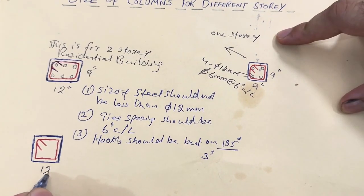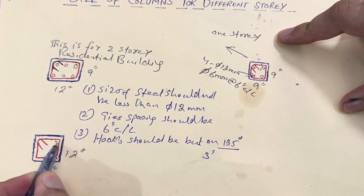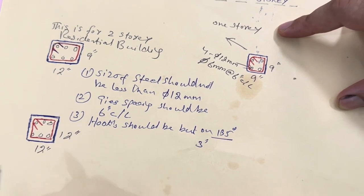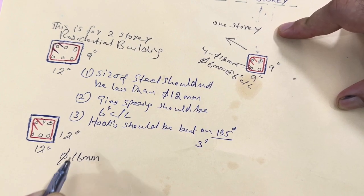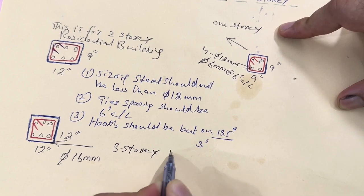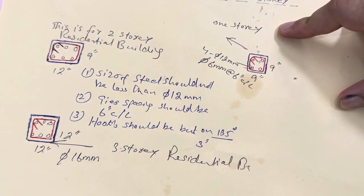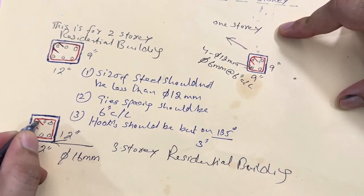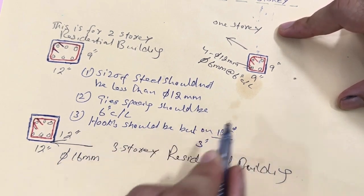For a 12 inches by 12 inches column, use 6 numbers of steel rods with a diameter of 16 mm. This is for a 3 storey residential building. Hooks should be bent at 135 degrees, and the tie spacing should be 6 inches center to center, as discussed before.